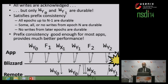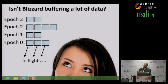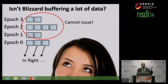You might be thinking: isn't Blizzard buffering a lot of data? Blizzard has to retire writes in epoch order, so while waiting for epoch zero to become durable, epochs one, two, and three can't issue and have to be buffered in memory. If Blizzard crashes at this point, it still provides prefix consistency, but the buffered writes will be lost. So how can we reduce that amount of buffering?